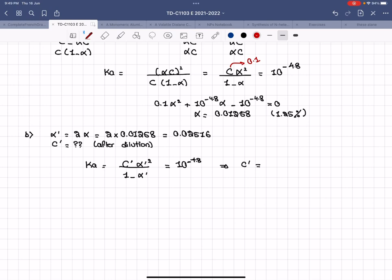When you solve the equation, in dilution C prime has to be lower than C. If it's not lower, then there's something wrong with the calculation. So if C is 0.1, C prime will be around 0.0244 molar. This is C prime.